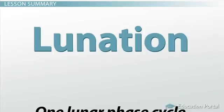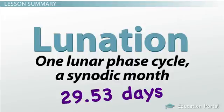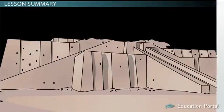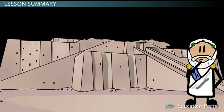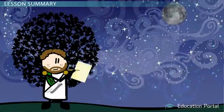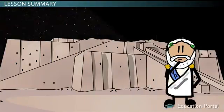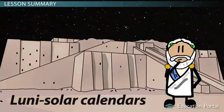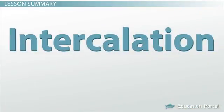A lunation, also known as one lunar phase cycle, a synodic month, is completed approximately every 29.53 days. Lunar calendars were some of the earliest ways by which to measure time in the ancient world. But if lunar calendars were attempted to be matched with the seasonal year, they would drift out of step. Lunar calendars that take into account the seasonal or solar year are known as luni-solar calendars. To keep the two aligned as best as possible, a process called intercalation was used to rectify any differences.